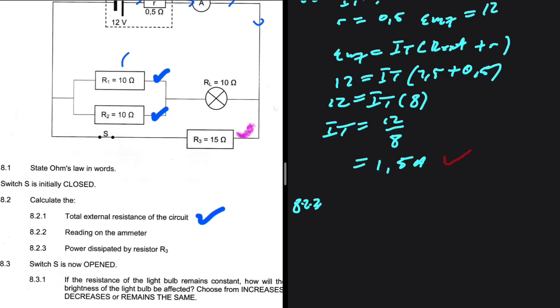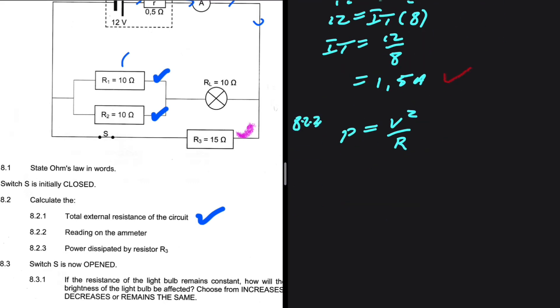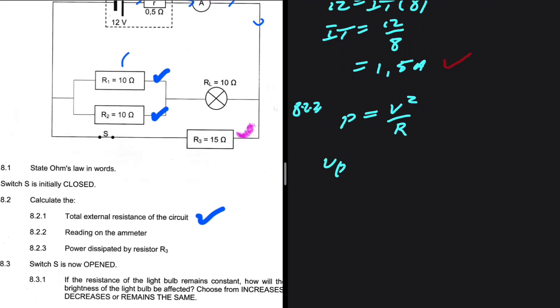So R3, the potential difference across R3 is V_P because on that path, we only have R3. If we calculate V_P, then we can say that the power dissipated by resistor R3 equals V squared divided by R. So let's go ahead and find V_P.